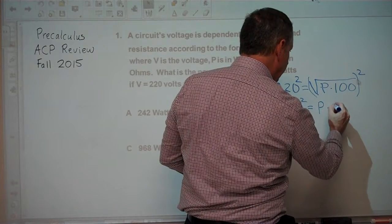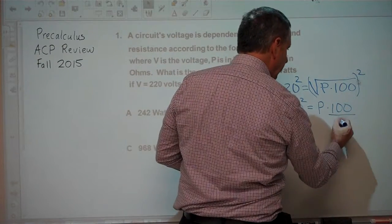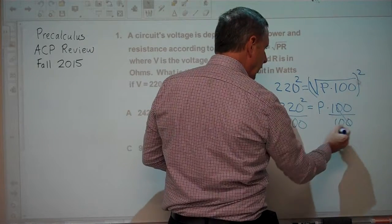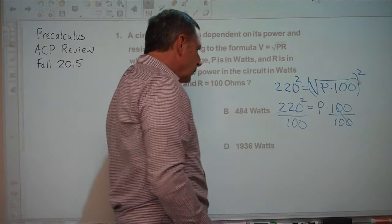Solving for P, if we divide both sides by 100, we have P equals 220 squared over 100.